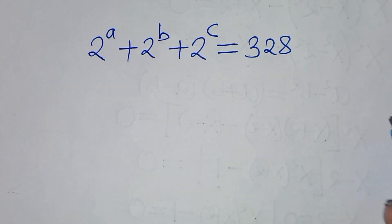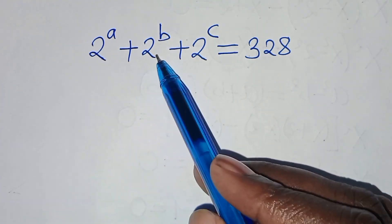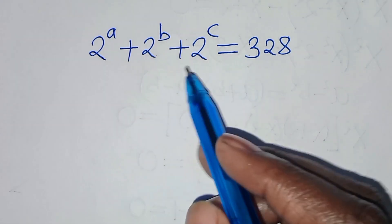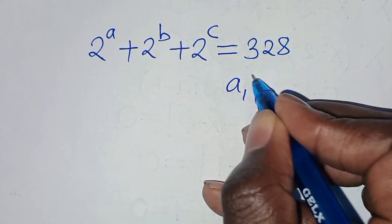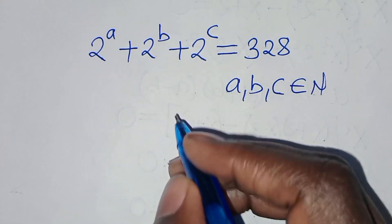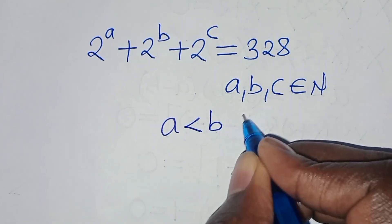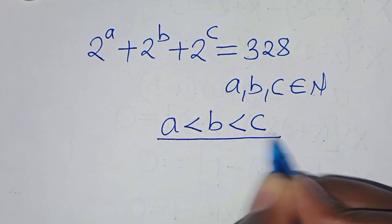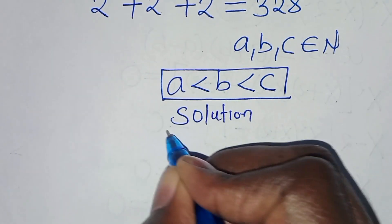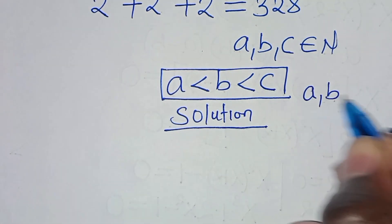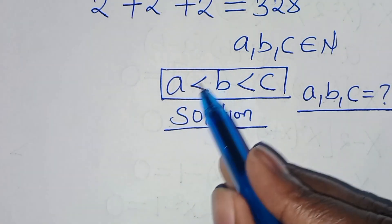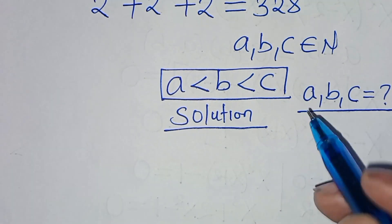Hello everyone, welcome to solve this nice algebra problem: 2 to the power of a plus 2 to the power of b plus 2 to the power of c equals 328. We need to solve for a, b, and c, where a, b, and c are members of natural numbers, and a is less than b and b is less than c.